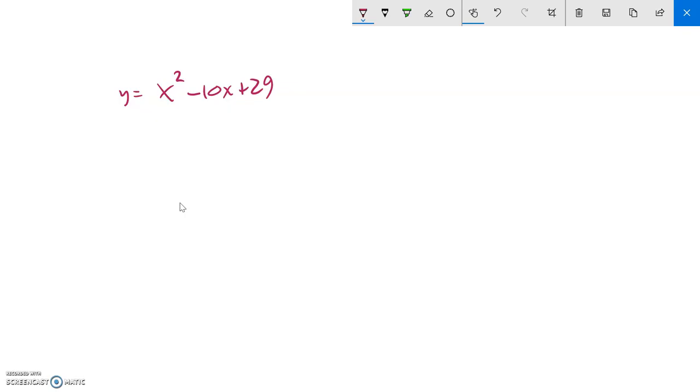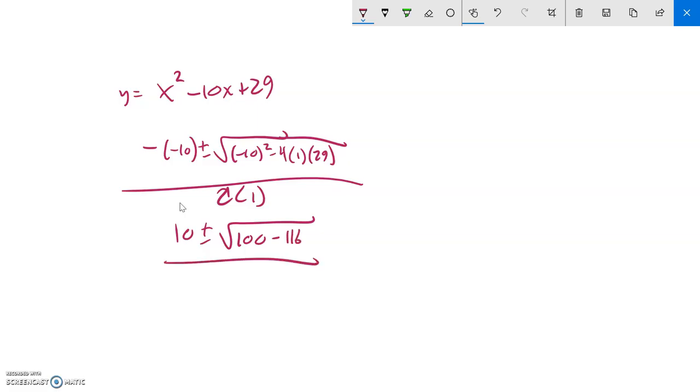So let's do that. We use quadratic formula again. Negative b plus or minus the square root of b squared minus 4 times a times c all over 2 times a. So, negative negative 10 is 10, plus or minus 10 squared is 100. And then I have, that's going to be minus 4 times 29, which is 116. 2 times 1 is 2.